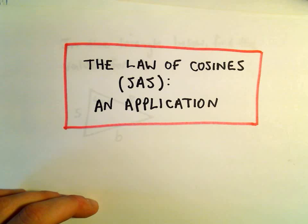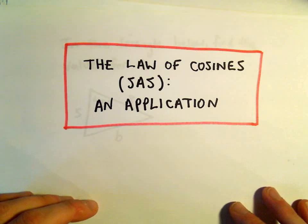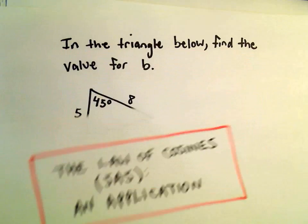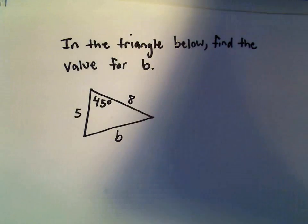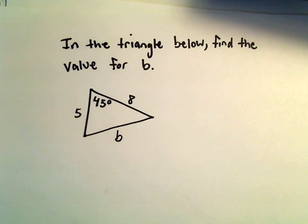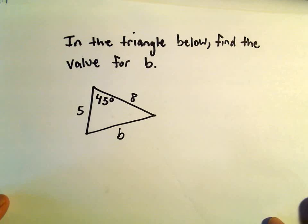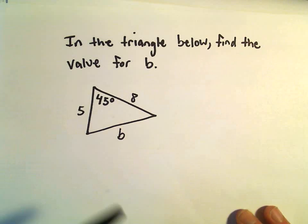Okay, so here we're going to do some more law of cosines problems, just kind of a warm-up to some application problems. Nothing crazy here. We just want to find in this triangle below, we're going to find the value here for this length b.